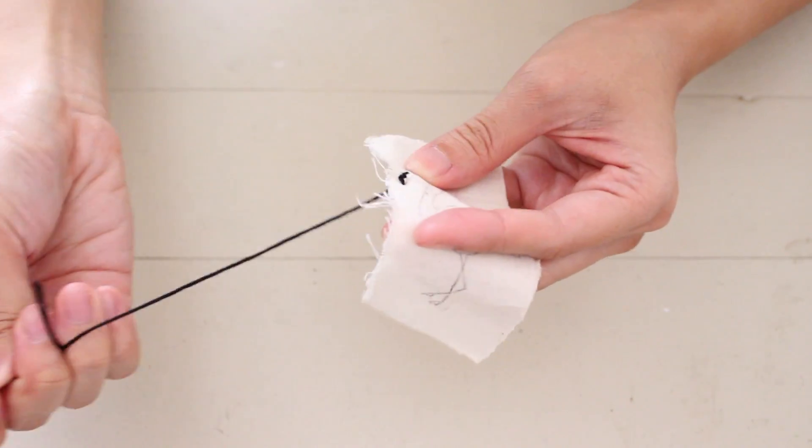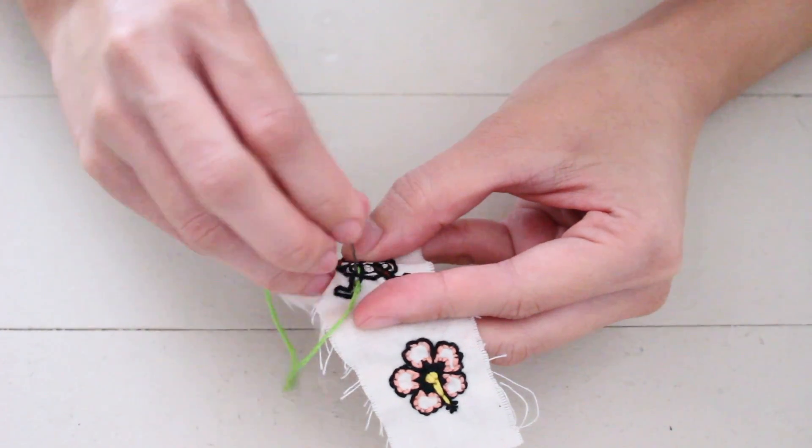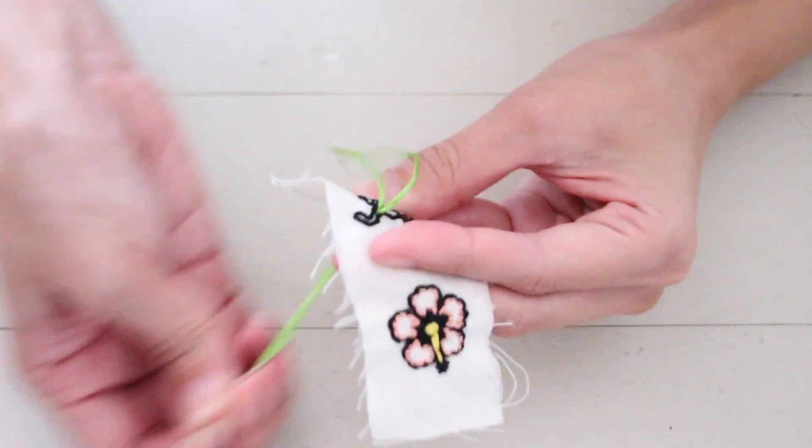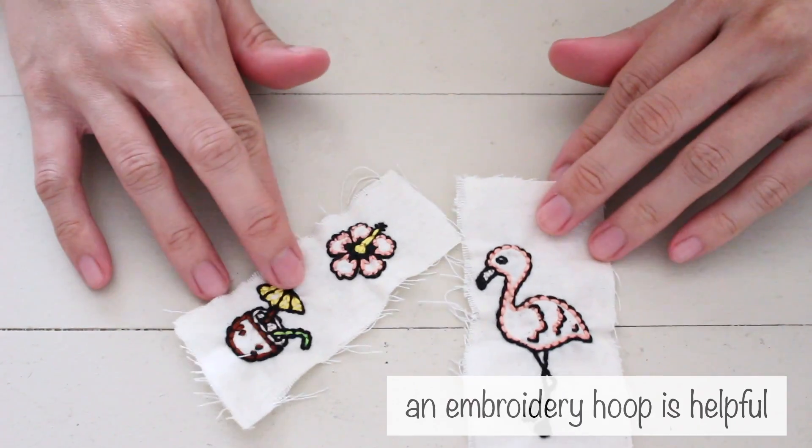At first, I used fabric scraps that weren't able to fit an embroidery hoop, and it turned out alright. My hand got tired of holding the fabric flat, so if you do have an embroidery hoop, you should use it.